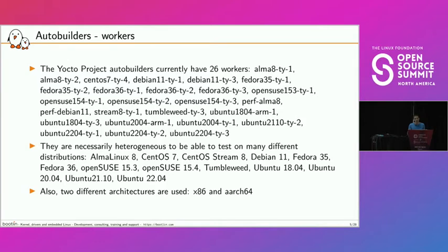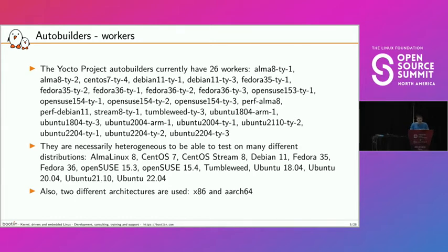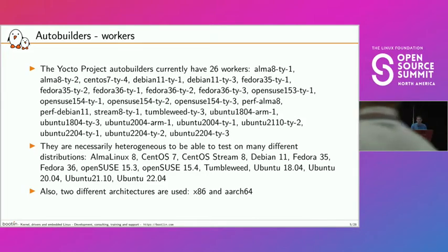We're not running all builds on all distributions all the time — builds are randomly assigned to workers, except some builds are Ubuntu-specific, CentOS-specific, or Fedora-specific. Those workers have two different architectures: x86 and ARMv8 (AArch64), in a goal to build on many different things.